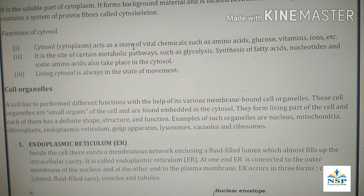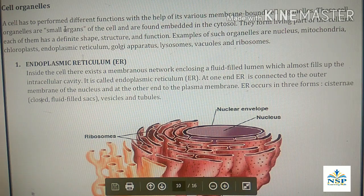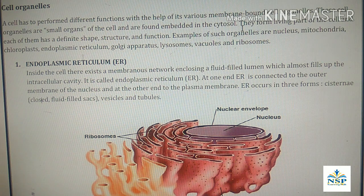The cytosol is always in the state of movement. Now, cell organelles: a cell has to perform different functions with the help of various membrane-bound cell organelles. These cell organelles are small organs of the cell and are found embedded in the cytosol. They form the living part of the cell and each of them has a definite shape, structure and function.